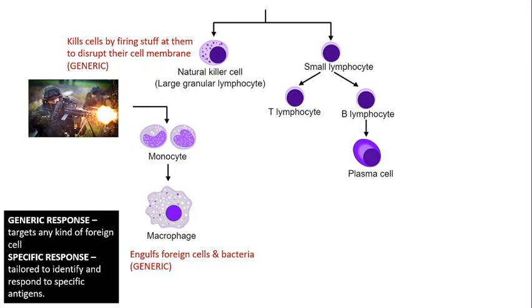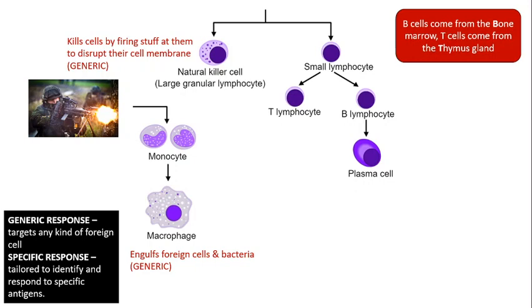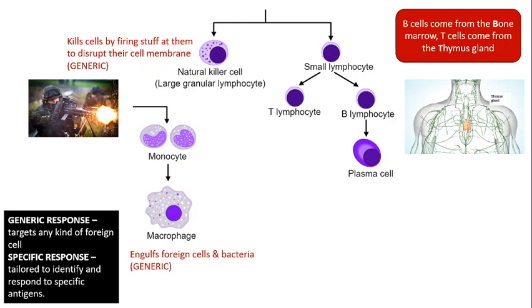Now let's look at B and T cells. The difference between these is that B cells are made in the bone marrow, whereas T cells come from the thymus gland. So the letter refers to where they've been made. You can see a picture of the thymus gland there, and that's important because it's going to be affected by the stress response — so that's not just background information, you do need to know that.